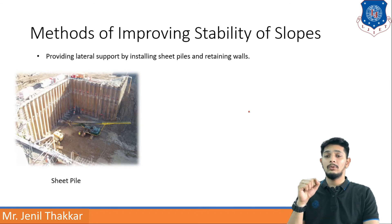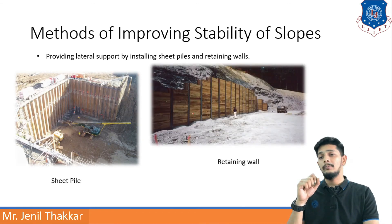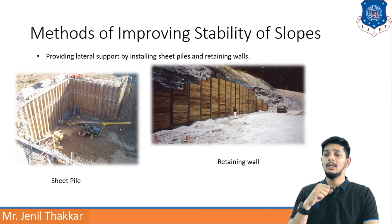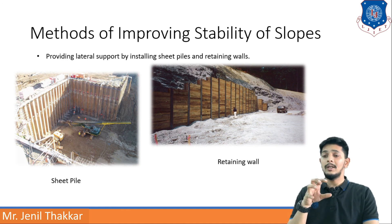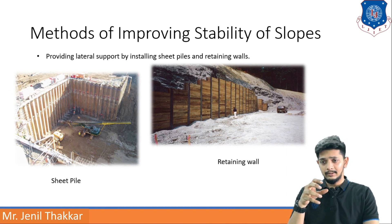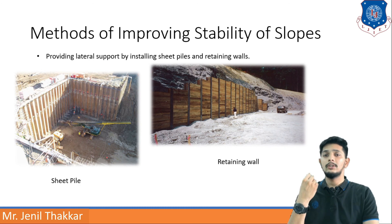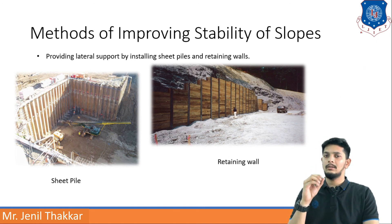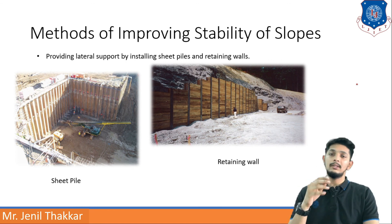Providing lateral support by installing sheet piles and retaining walls is another method. Sheet piles are commonly seen on construction sites for underground parking and similar structures; they retain the soil behind them. Retaining walls similarly hold back sloped soil. Both methods stabilize slopes effectively. That concludes this lecture; more theory will be covered in the next video.